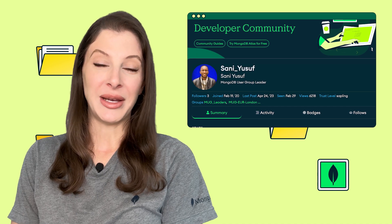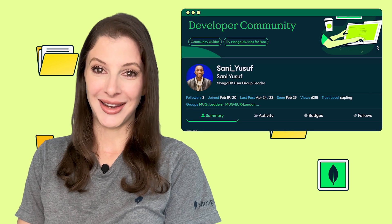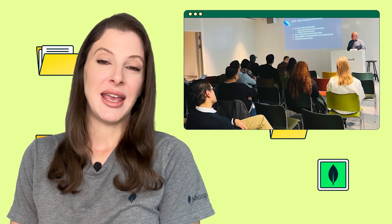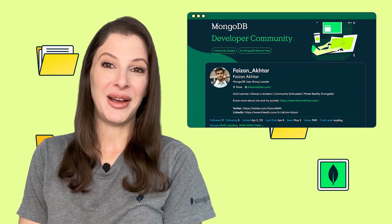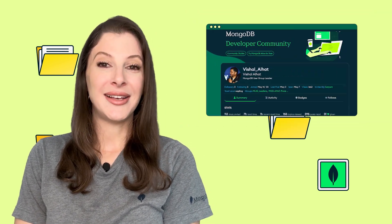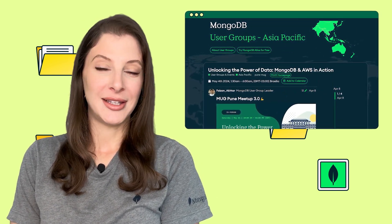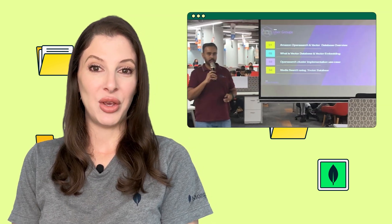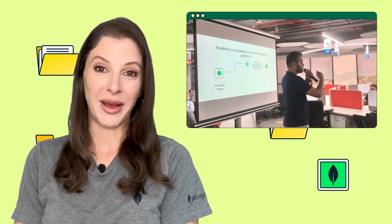At the London MUG organized by Sani, attendees gained insights into legacy system migration and advanced search techniques. Community creator John highlighted challenges and strategies in decommissioning legacy insurance systems, while Luce explored full-text search and vector search with Blazor. The Pune MUG, led by Fizen and Vishal, organized its third meetup in collaboration with the AWS user group, showcasing cluster-to-cluster sync in MongoDB by Fizen, database migrations with AWS presented by Raouf, and securing MongoDB data on AWS by Vishal.